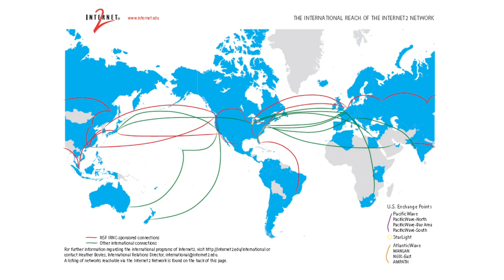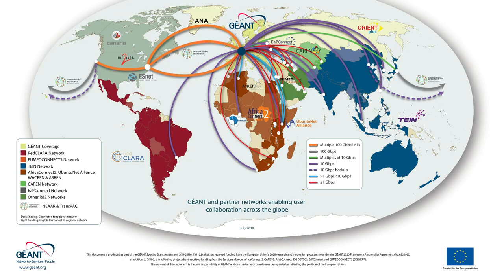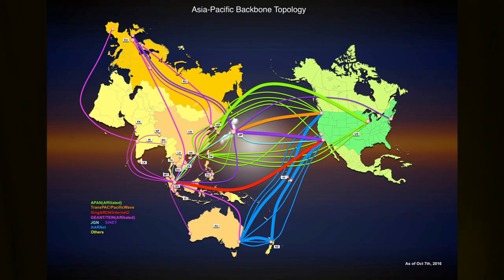Let's look at a few maps showing several different perspectives of the global research and education network connectivity. This is the U.S. view of global connectivity, and the European view. I would point out that this map shows not only the global connectivity but is color-coded to show which countries have NRENs in darker color and the countries that have no operating NREN are shown in lighter colors. And finally, the Asia-Pacific view of the global connectivity. I should point out that these maps show mostly the same circuits but each brings some of the views and focus of the region.